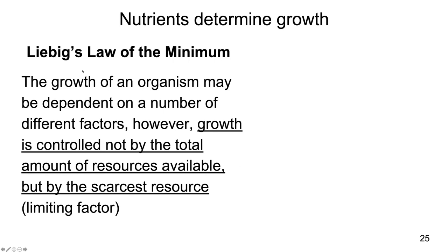Liebig's Law of the Minimum essentially states that the growth of any organism is controlled not by the total amount of resources available, but by the scarcest resource or the limiting factor. So although growth of an organism can be dependent on a number of different factors, it's really just one factor — the scarcest resource — that limits growth.